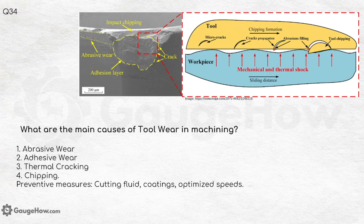What are the main causes of tool wear in machining? Abrasive wear, adhesive wear, thermal cracking and chipping. Preventive measures include cutting fluids, coatings and optimized speeds. Mechanical and thermal shocks and their impacts should also be known for interviews.